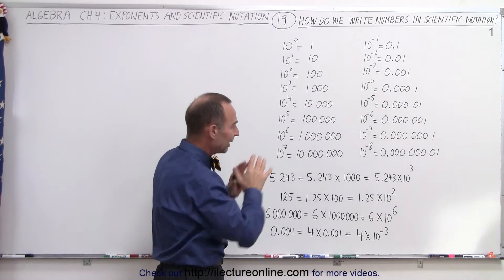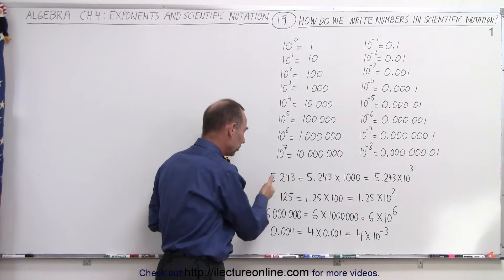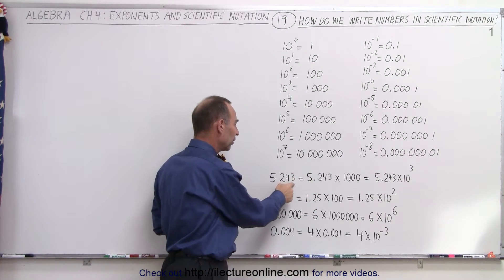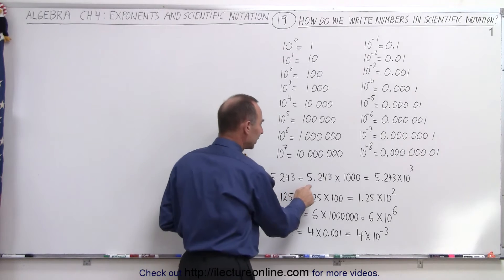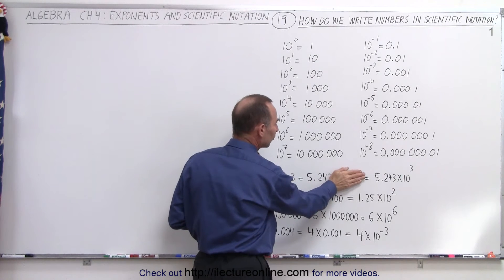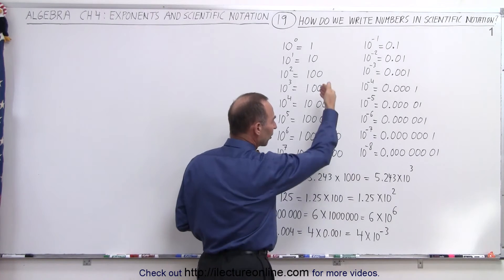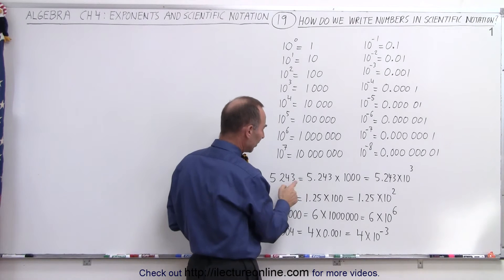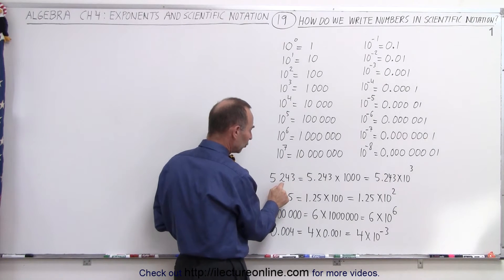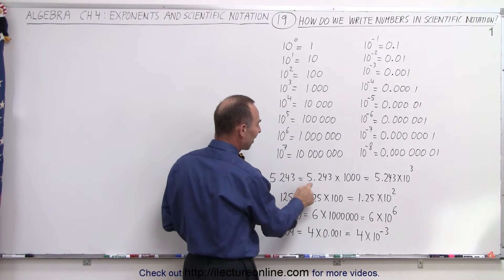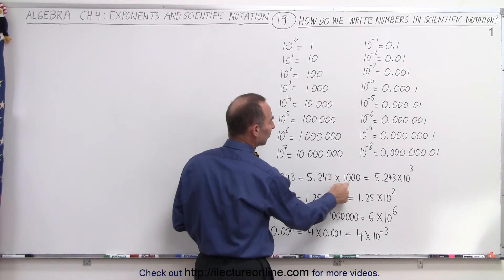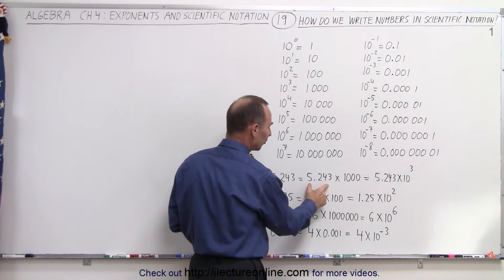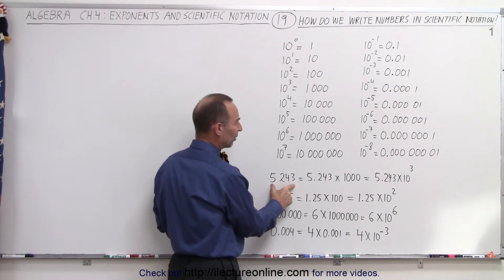So once we understand that, now we go take a look at a number such as 5,243. And what if we want to write it like this with some indication of 10 with some exponent on it? Well, in this case, notice that 5,243 is equal to 5.243 times 1,000. If I multiply this number times 1,000, I get this number again.